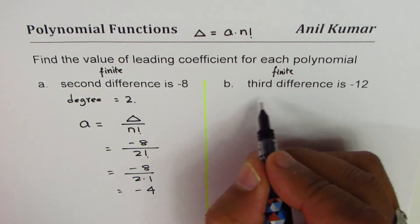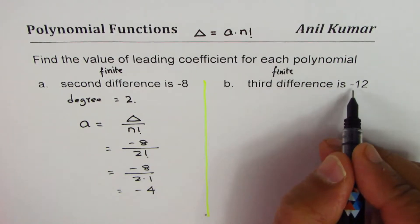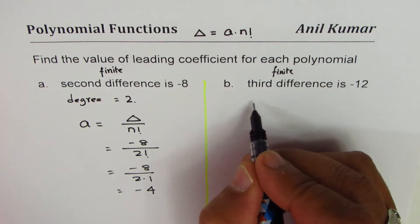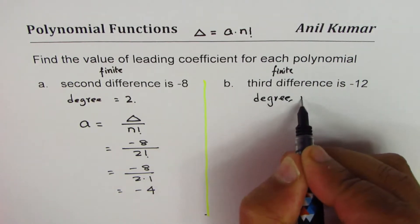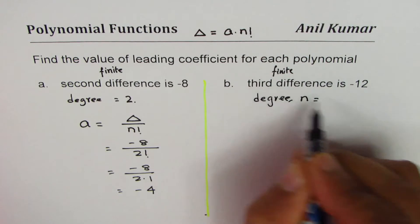So here third difference is constant, which is -12. That means the degree, I should say n value, is 3.